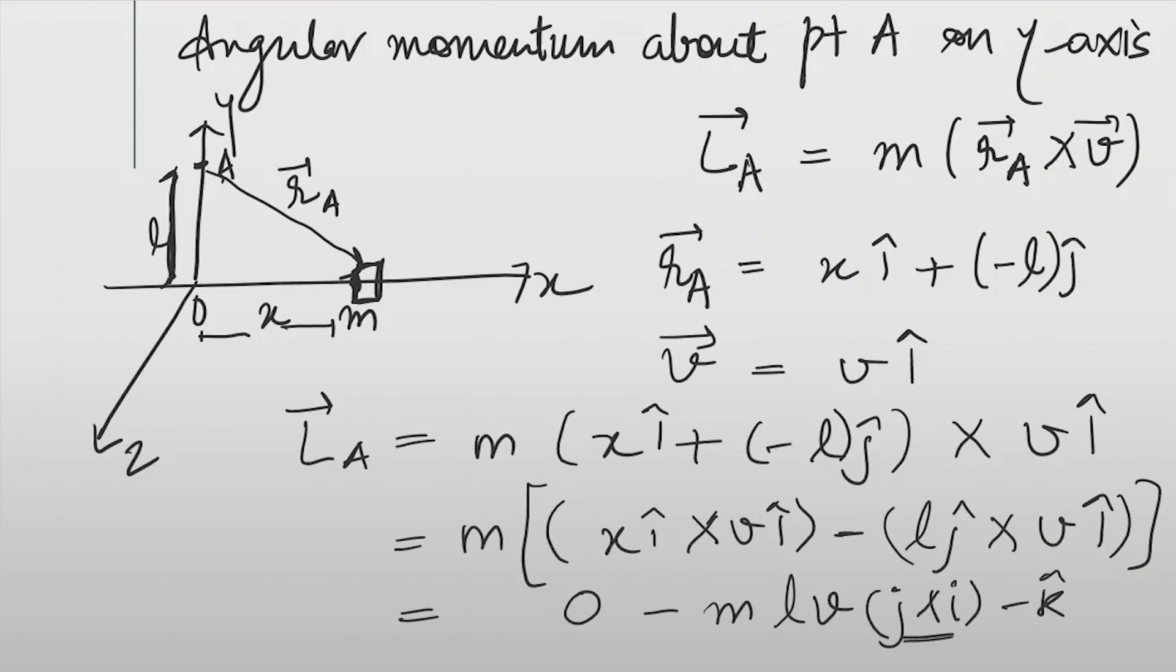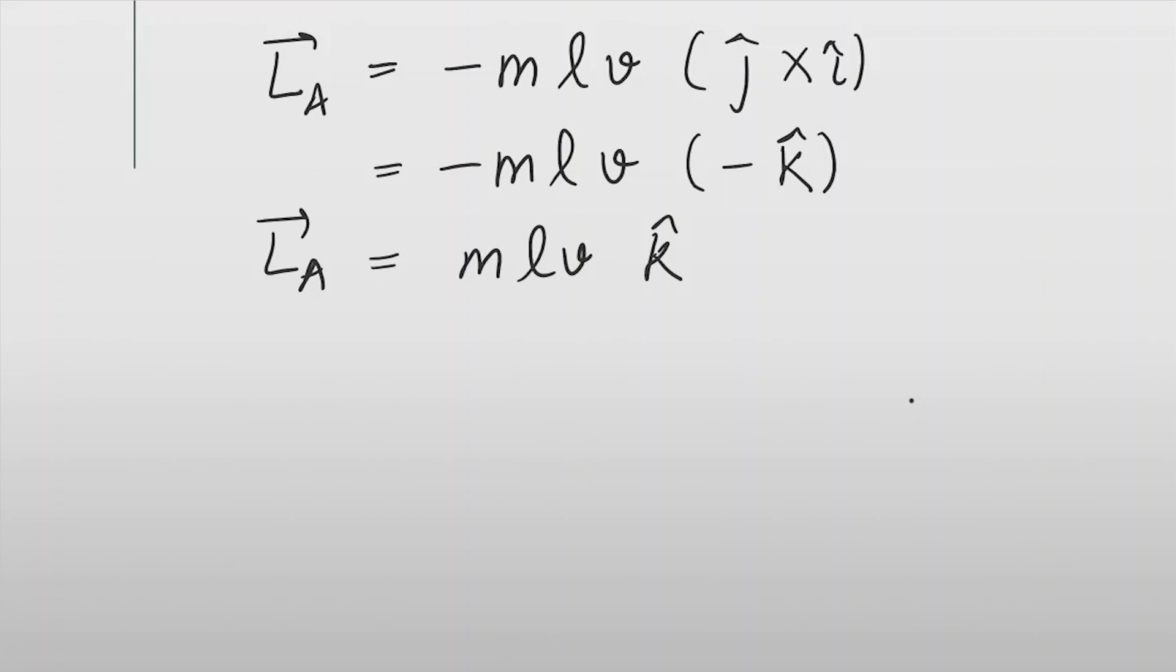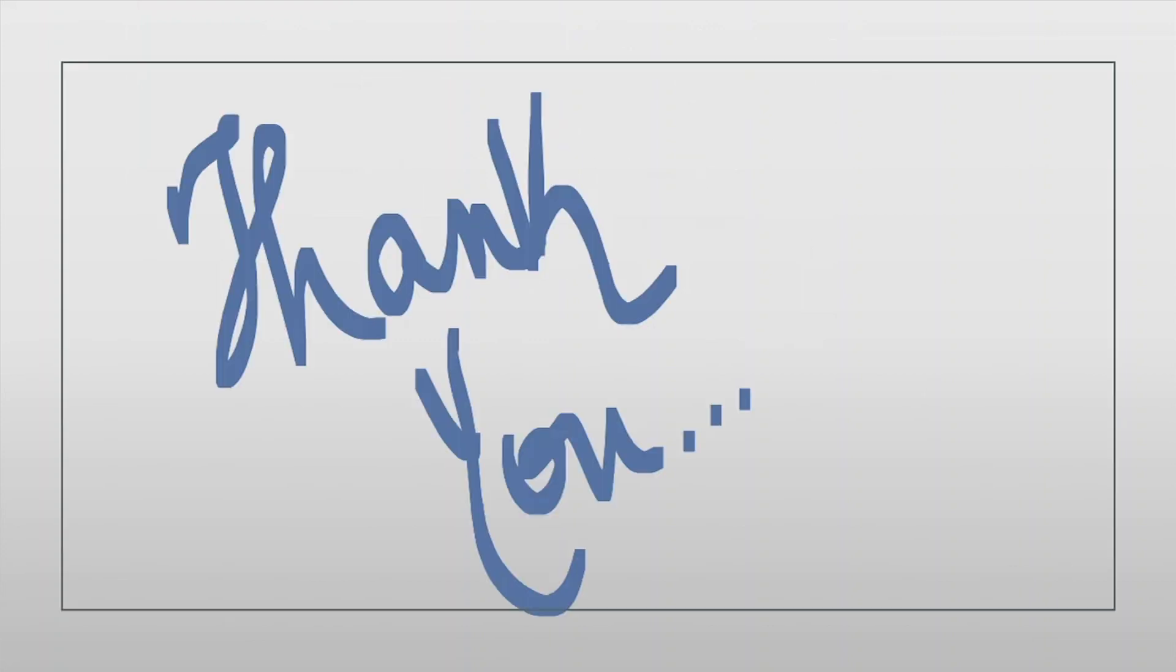j cap cross i cap equals minus k cap. So the L_A expression comes out to be minus M L V times minus k cap, which is equal to M L V k cap. This is our angular momentum about point A, and this is the solution for this question.